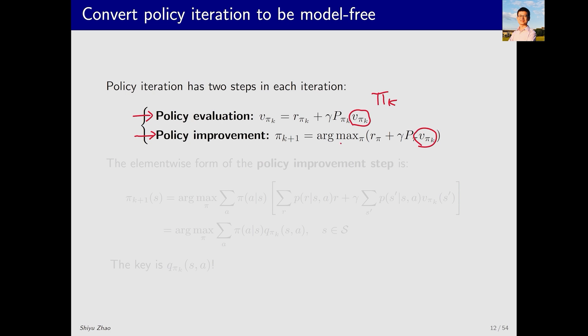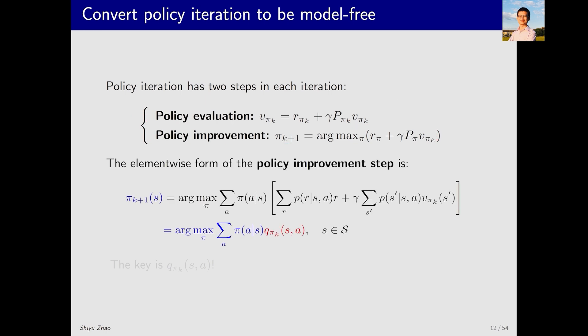How? Through solving this optimization problem to find a new policy pi k plus one. We've talked about this before. Policy improvement can be written out for each state, resulting in this equation. This term is q pi k, the action value. How do we solve this optimization problem to obtain a new policy pi? Well, we select the maximum q pi k, as we've introduced before. So, the key quantity here is q pi k. Let's look at it more closely.